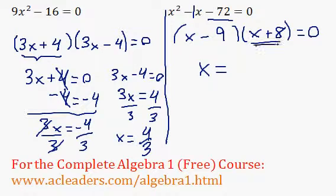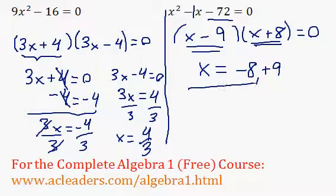So x is going to be equal to negative 8 or positive 9. Just because if I plug in a negative 8 over here for x, negative 8 plus 8 is 0, and 0 times anything is 0. And over here, 9 minus 9 is also 0. 0 times anything is 0. So x is equal to negative 8 or positive 9.